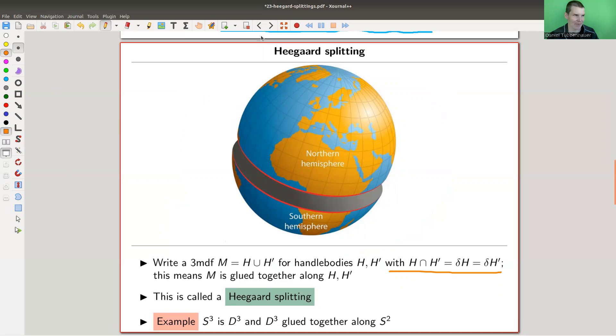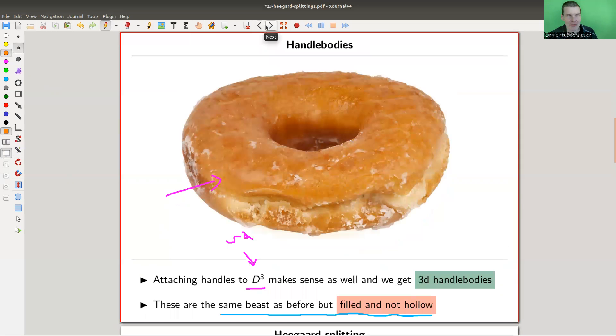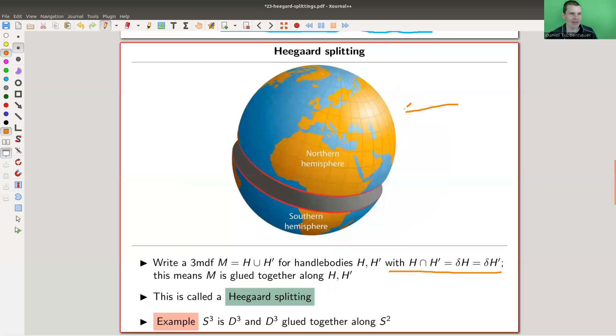But essentially, the two basic pieces are just doughnuts or bagels or whatever you want to call them. The bagel is here, and the other bagel is here. In my picture, in my example, this is a very boring bagel, but I will come back to that in a second. So any such splitting of a three manifold into handle bodies is called a Heegaard splitting.